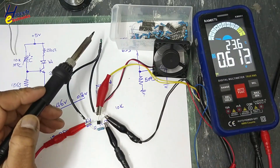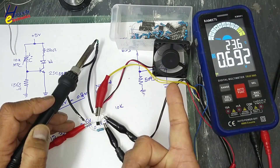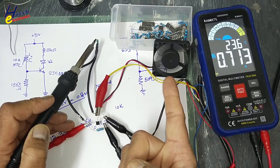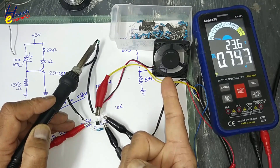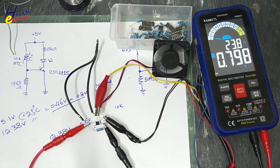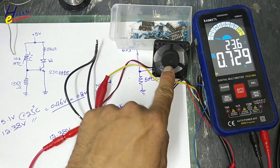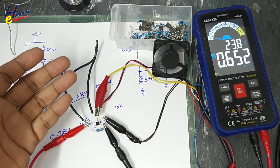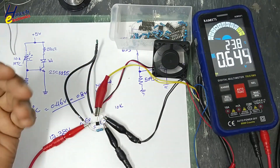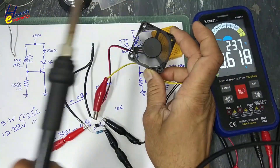Let's produce heat on this NTC. The base voltage reaches 0.79V and the fan speed is full. When it cools down, the speed is being reduced. We can use this circuit in any project or control any device using this method.